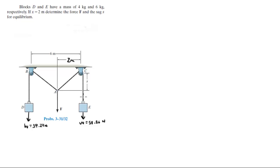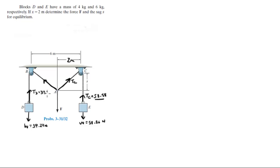The tension on this cable is the same as this weight, so let's call it Tc, which is also equal to 58.86 N in equilibrium. And this Tc is the same — 58.86 N. The same goes for Td, which is equal to 39.24 N, same as this weight in equilibrium.